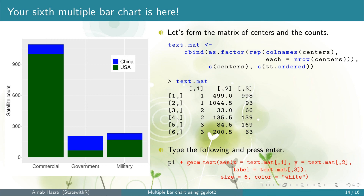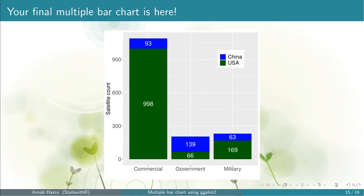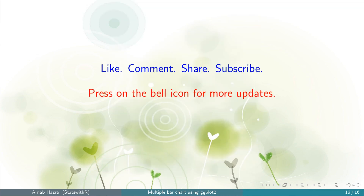Outside aesthetics, set size = 6 — or choose some other number; the larger the number, the bigger the font — and color = 'white'. Here we are using dark colors (blue and dark green), so the default black text would be difficult to visualize. If you choose lighter colors for the bars you can use the default. Now press Enter and you get your final multiple bar chart — you can see that the actual satellite counts are at the centers of each bar component. If you found this video helpful, please like, comment, share, and subscribe to my channel and press the bell icon for more updates.